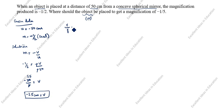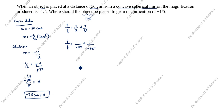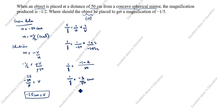Next, the mirror formula: 1 by f is equal to 1 by u plus 1 by v. So 1 by f equals 1 by minus 50 plus 1 by minus 25. Taking LCM as 50: the numerator gives minus 1 minus 2, which is minus 3. So 1 by f is equal to minus 3 by 50, therefore f is equal to minus 50 by 3 centimeters.